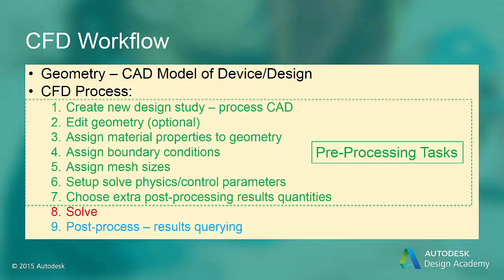After the geometry is ready, material properties can be assigned to various parts. Next, boundary conditions are assigned to the geometry, which could be edges, surfaces, or volumes. With the geometry, material, and boundary condition information, the CFD mesher can create a mesh automatically.